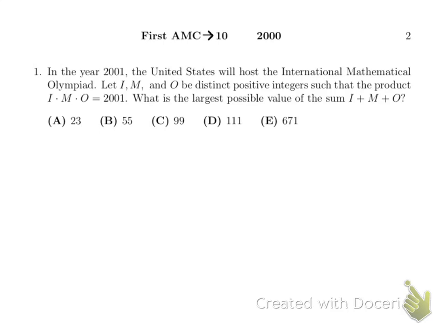In the year 2001, the United States will host International Mathematical Olympiad. Let I, M, and O be distinct positive integers, so that the product equals 2001. What is the largest possible value of the sum?